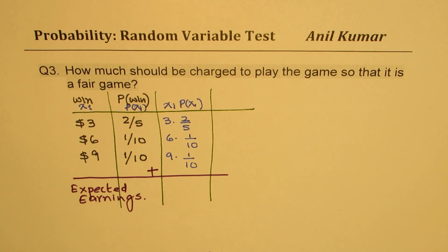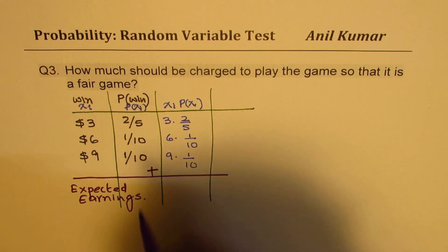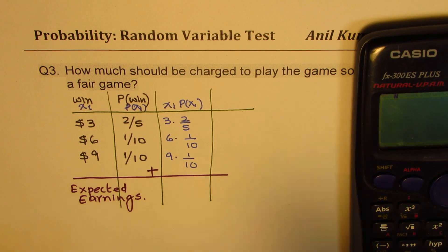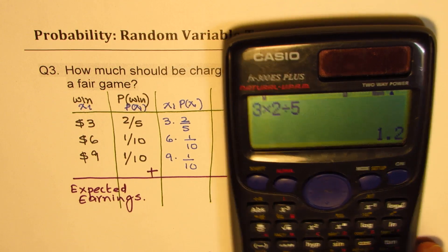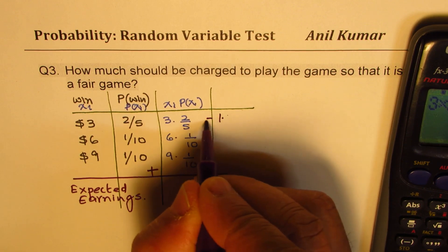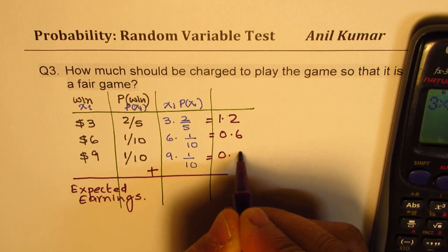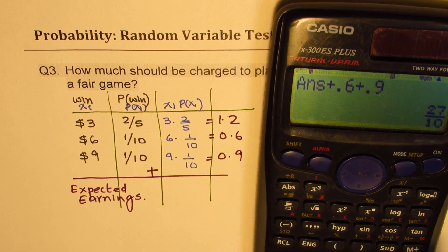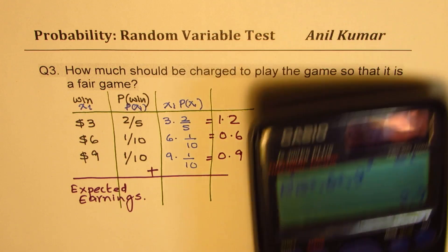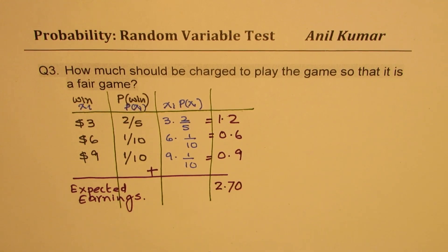A game will be fair when you pay as much as you are expected to win. So let's add these three values and get our answer. So we have 3 times 2 divided by 5, which is 6 over 5, or 1.2. This is 0.6, and this is 0.9. So when you add them, you get 1.2 plus 0.6 plus 0.9 equals 27 over 10, or $2.70.